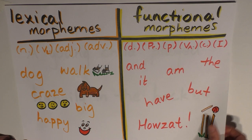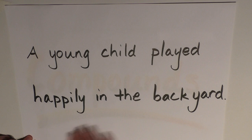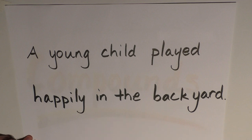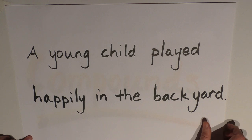Alright, now we can have a try. The sentence we're working with is: 'A young child played happily in the backyard.' The first thing we want to do is identify which are the free morphemes and which are the bound morphemes. Once we've identified the free morphemes, we can then try to identify which are lexical and which are functional. And if we really want to extend ourselves, we can also revisit our knowledge of bound morphemes and identify the inflectional and derivational options too. If you want to have a go yourself, pause the video now, otherwise I'll get straight on with it.